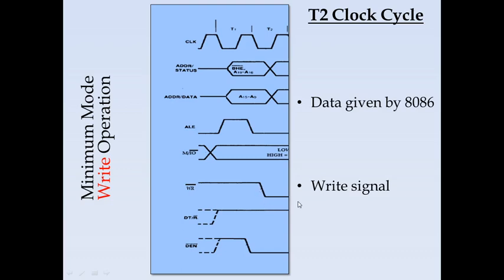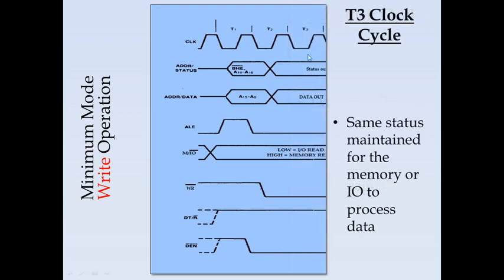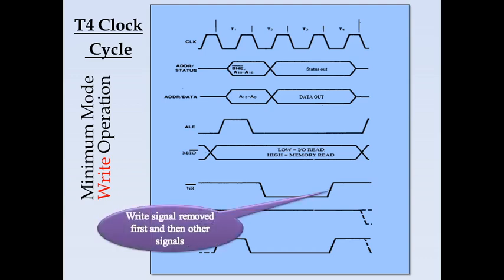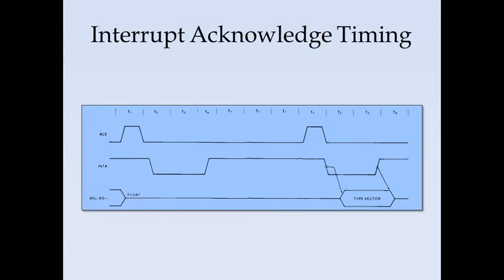After receiving the WRITE signal and data, the memory device processes the data. During the T3 cycle, the data is written into the memory or I/O device, and the same status is maintained for the peripheral to process. During T4, the WRITE signal is removed first, followed by the removal of the other signals including data status. This completes the minimum mode write operation timing diagram.